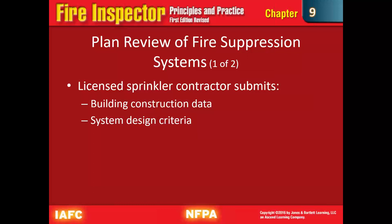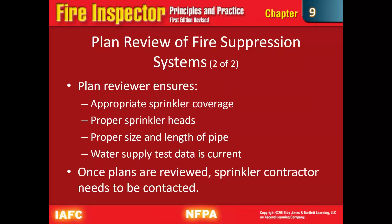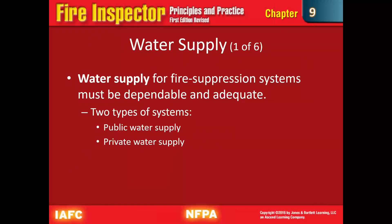A licensed sprinkler contractor submits construction and building data — including flow and pressure in the water system — and the system design criteria for the type and occupancy of the building. We ensure appropriate sprinkler coverage, appropriate sprinkler heads, correct pipe size and length, and adequate water supply, making sure the data they've received is current. Once reviewed, the contractor is contacted to let them know whether the plans are approved or denied.